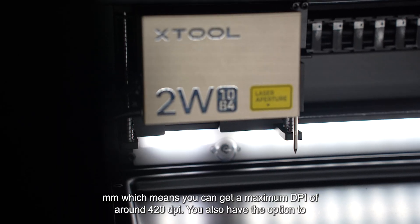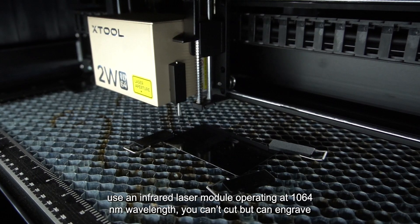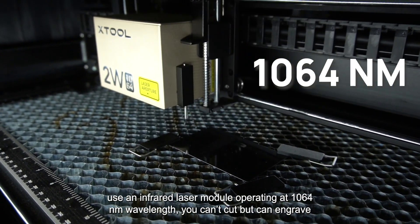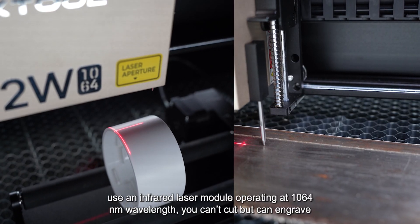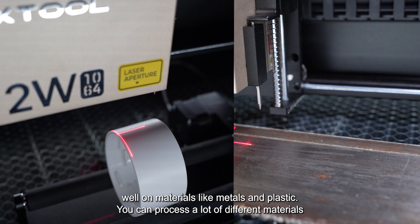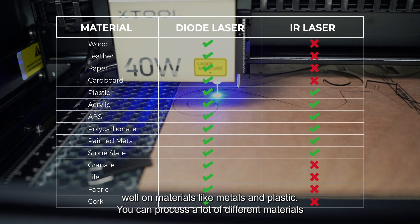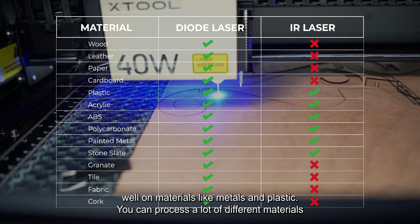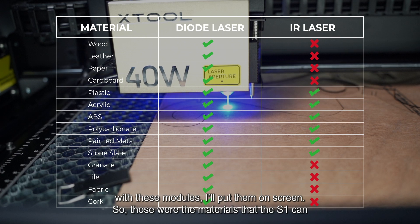You also have the option to use an infrared laser module operating at 1064 nanometer wavelength. You can't cut, but can engrave well on materials like metals and plastics. You can process a lot of different materials with these modules. I'll put them on screen.